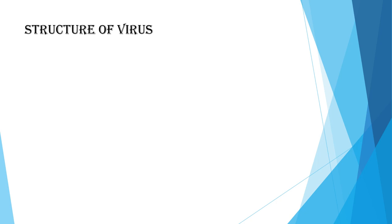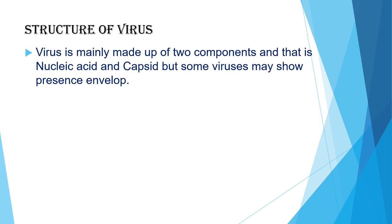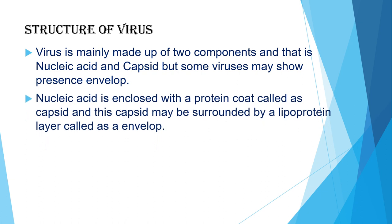Let's see the structure of a virus. A virus is mainly made up of two components: nucleic acid and capsid, but some viruses may show the presence of an envelope. Nucleic acid is enclosed within a protein coat called a capsid.